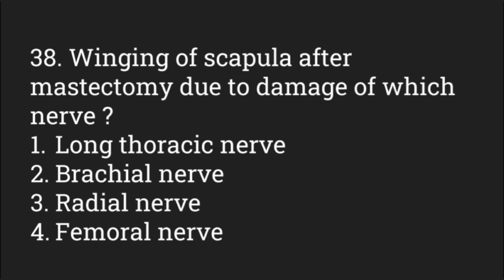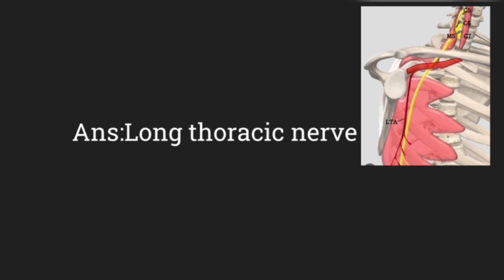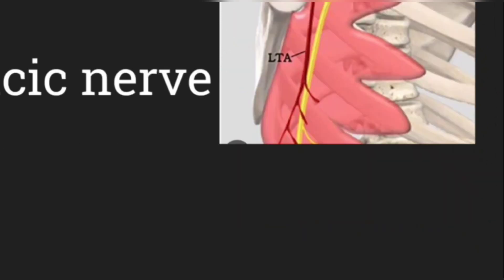Winging of scapula after mastectomy is due to damage of which nerve? Options: long thoracic nerve, brachial nerve, radial nerve, femoral nerve. The femoral nerve is in the leg, the radial nerve in the wrist, and the brachial nerve along the humerus. The long thoracic nerve crosses near the breast area and can be injured during mastectomy. The answer is the long thoracic nerve.